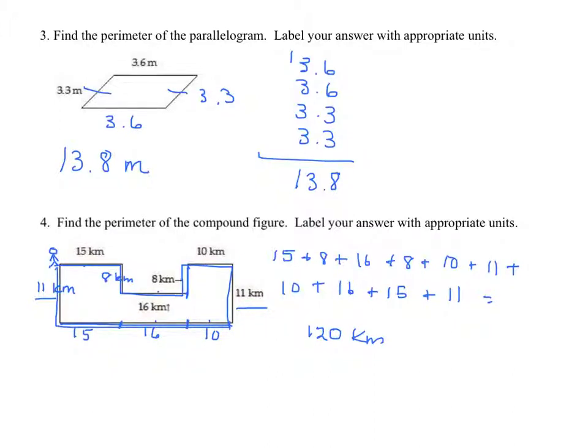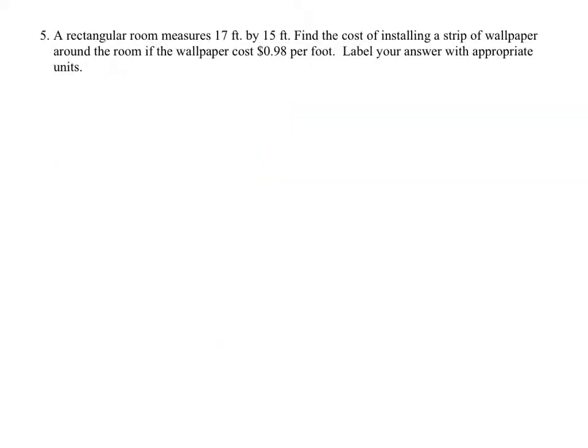So let's look at the next. A rectangular room measures 17 by 15, well, 17 feet by 15 feet. The cost of installing a strip of wallpaper. So we're going to go around the object. Around the room. If the wallpaper costs 98 cents a foot, find the total cost. So first we need to get the perimeter,